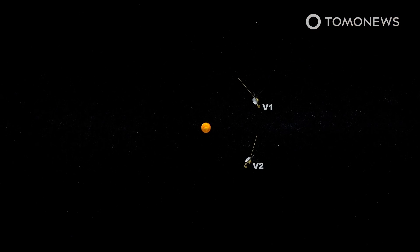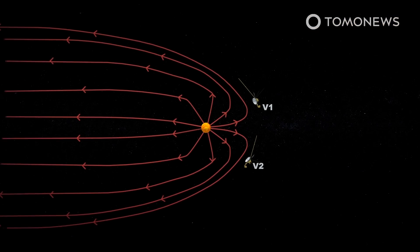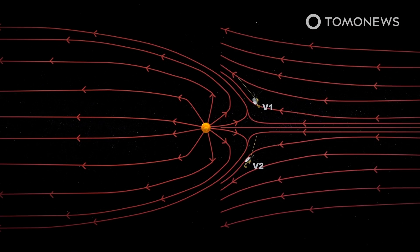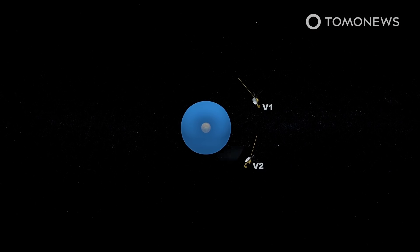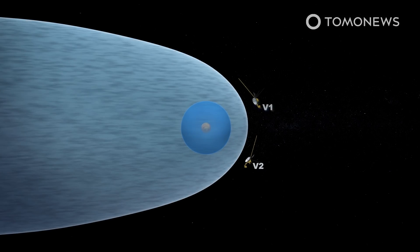Live Science reports that Voyager 2 detected a fiery plasma wall in the heliopause where the sun's outward-blowing solar winds clash with cosmic rays. This barrier protects the solar system by repulsing and weakening cosmic rays.